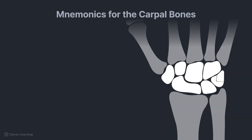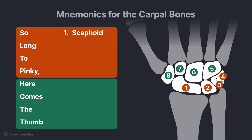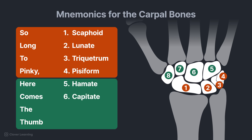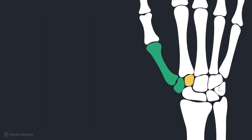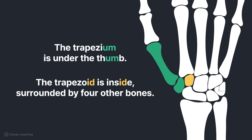Do you remember the mnemonic for the carpal bones? Let's review the one that follows the carpals in a circle, starting with the most lateral bone in the proximal row: So long to pinky, here comes the thumb — scaphoid, lunate, triquetrum, pisiform, hamate, capitate, trapezoid, trapezium. Also remember, the trapezium is under the thumb, and the trapezoid is inside, surrounded by four bones.